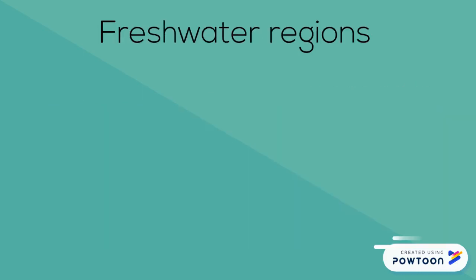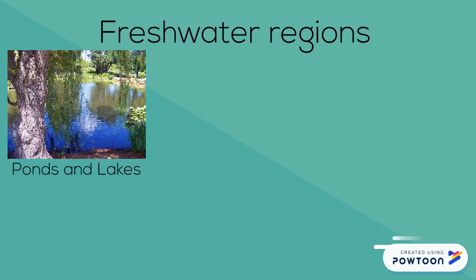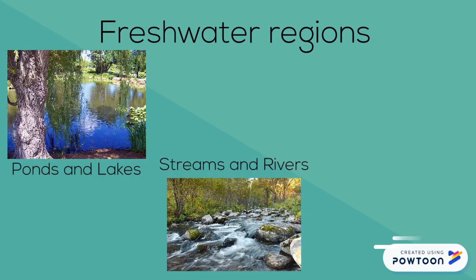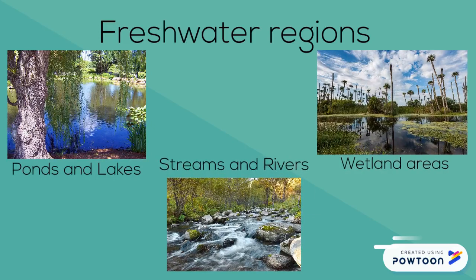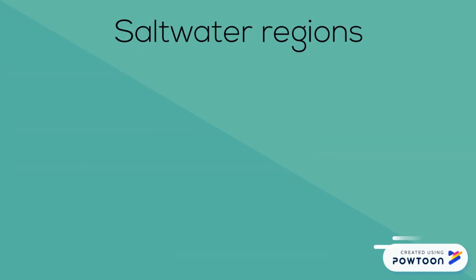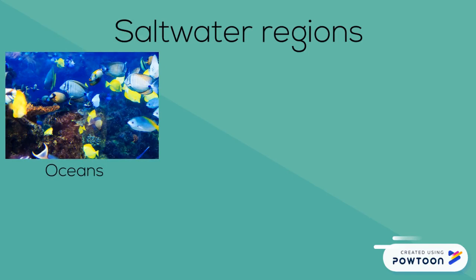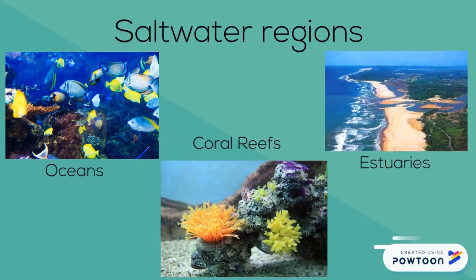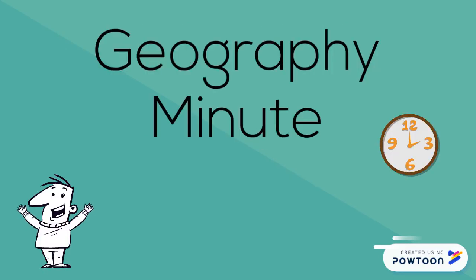Freshwater regions are broken down into ponds and lakes, streams and rivers, and wetland areas. Saltwater regions are broken down into the oceans, coral reefs, and estuaries. Well, I hope this has helped because that's your Geography Minute.